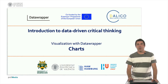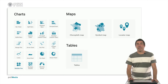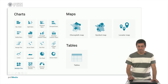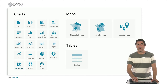In this video we are going to introduce the first of three types of visualizations with Datawrapper, which will be charts. The three types we are going to consider are charts, maps, and tables. As you can see on the left, there are many types of charts we are going to use: bar charts, bullets, line representations, scatter plots, and pie and donut-related graphs.